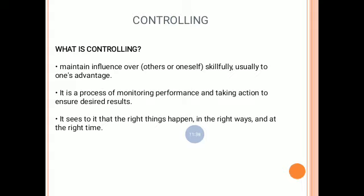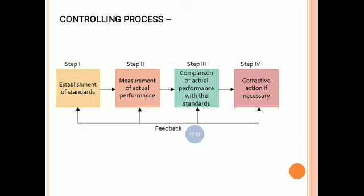The last function of management is controlling. Controlling means maintaining influence over operations to one's advantage — it is a process of monitoring performance and taking action to ensure desired results, so that the right things happen in the right way at the right time. The controlling process has four steps: establishing standards, measurement of actual performance, comparison of actual performance with standards, and corrective action if necessary.